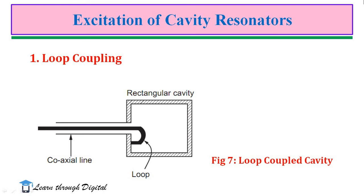Next, we discuss the excitation of cavity resonators. In order to excite a particular mode, the cavity must be properly coupled to the external source. Different coupling methods are used in microwave filters and wave meters. The first type is loop coupling. In loop-coupled cavity, a rectangular cavity is loop-coupled to a coaxial line. The loop size is very small and the current in the loop can be considered constant. The conduction current in the loop excites a linking magnetic field. The plane of the loop is placed perpendicular to the magnetic flux lines.